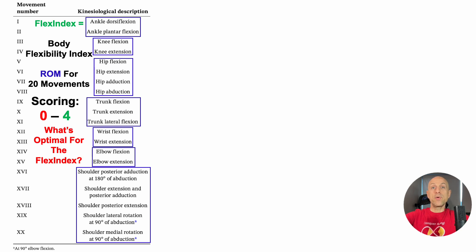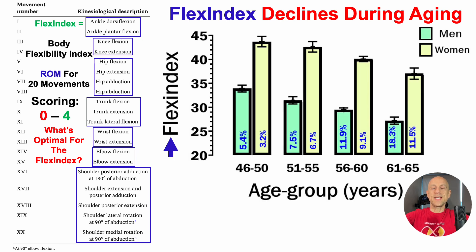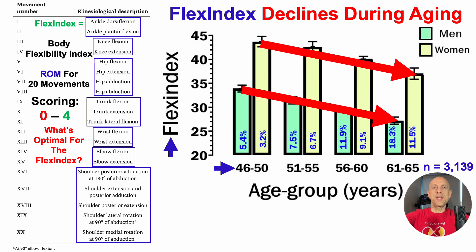Each of these movements was scored from zero to four, so what's optimal? One way to define that is by looking at how it changes during aging. Whole body flexibility, as indicated by the flex index, declines during aging. With the flex index on the y-axis plotted against age, the age group is from 46 to 65 years. This study is relatively small — about 3,100 people — but as far as I know, there are no other studies looking at a whole body flexibility metric index and all-cause mortality risk, so this is the only study that exists.